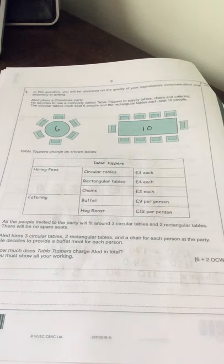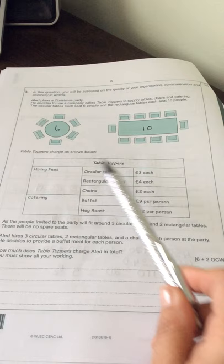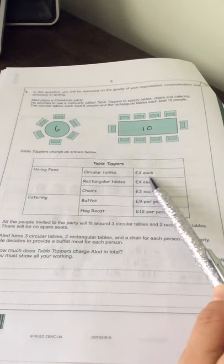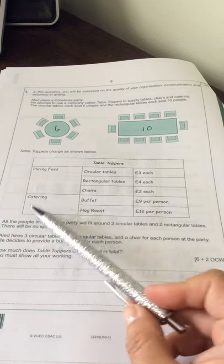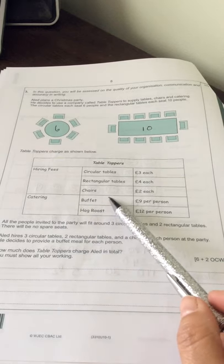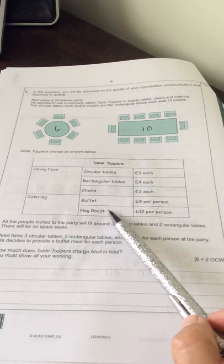So the table toppers charge is below and we can see that the hiring fee for a circular table is three pounds each. Every rectangle table is four, chairs are two pounds. And then there's two catering options, buffet or a hog roast.